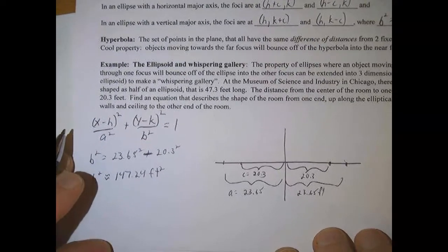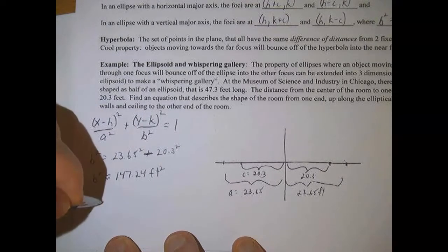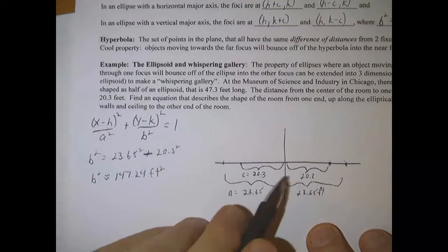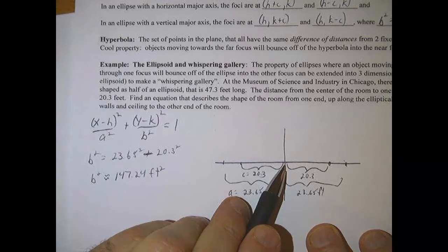So our equation, we pretty much have it pieced together now. And by the way, where is the center? The center of this ellipse is going to be 0, 0.